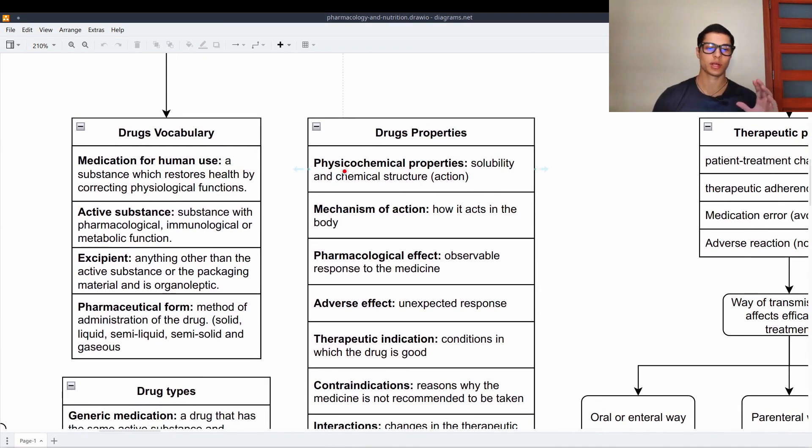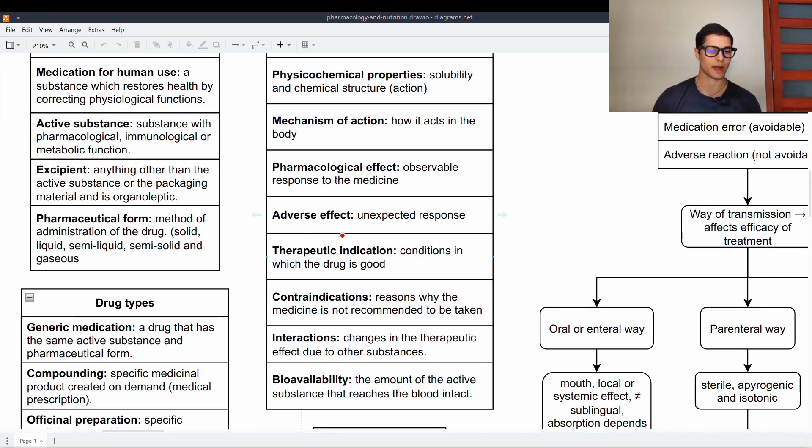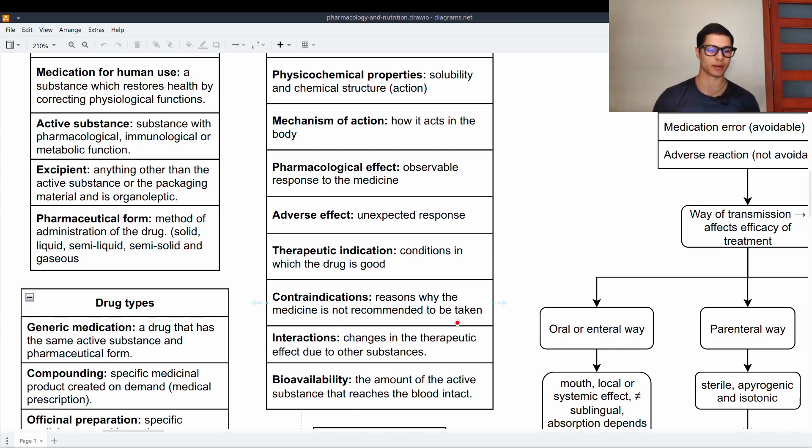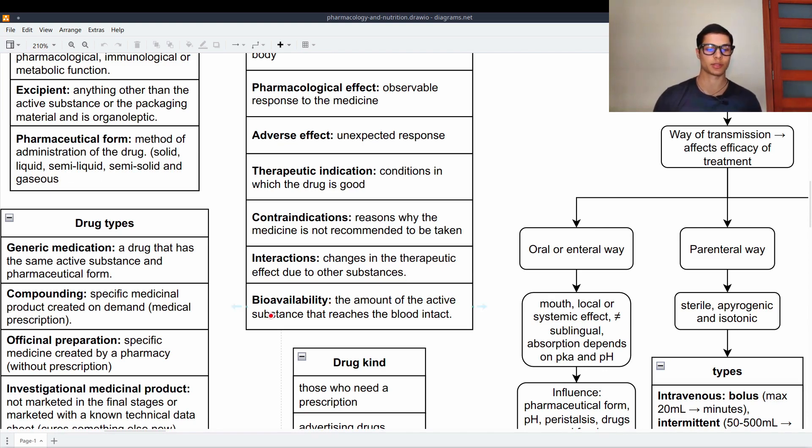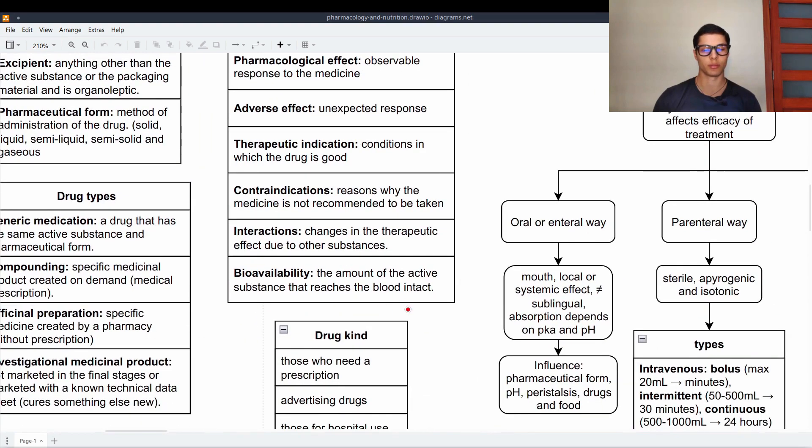Then drug properties. Drug properties such as physical chemical properties of solubility and chemical structure, the action, active substance, mechanisms of action, how it acts in the body, pharmacological effect, the observable response to the medicine, adverse effect and unexpected response. Then we have therapeutic indication which are the conditions in which the drug is good for us. Contraindications, the reasons why the medicine is not recommended to be taken. Interactions which is what we're going to focus on, which are the changes in the therapeutic effect due to other substances such as food. And bioavailability, which is the amount of the active substance that reaches the bloodstream intact.